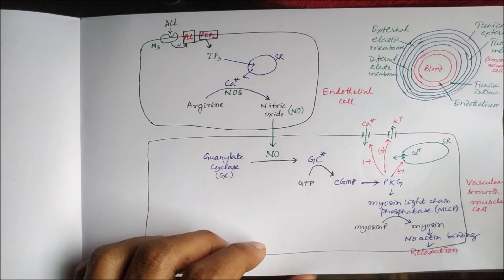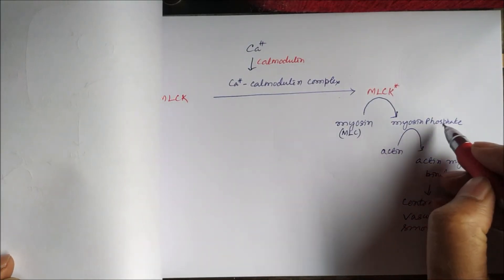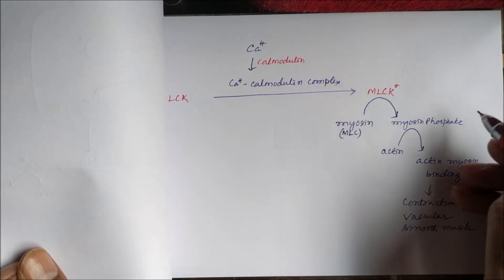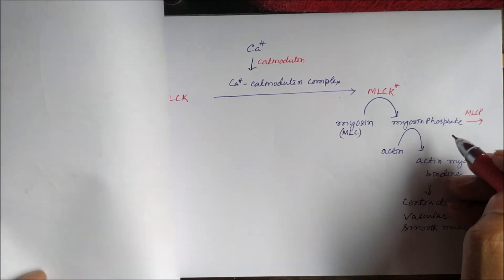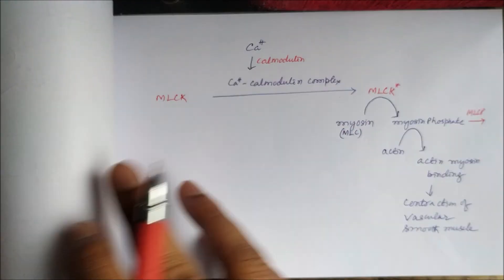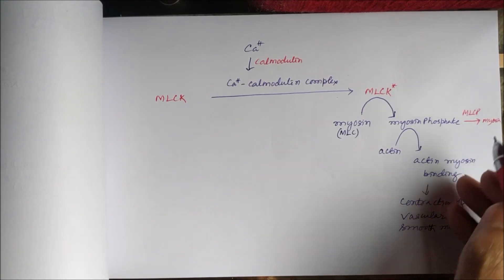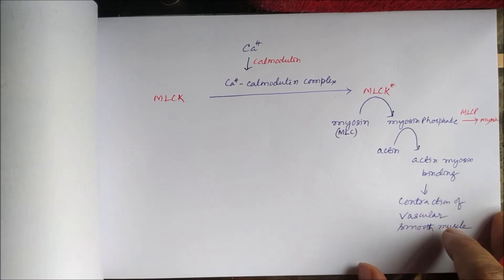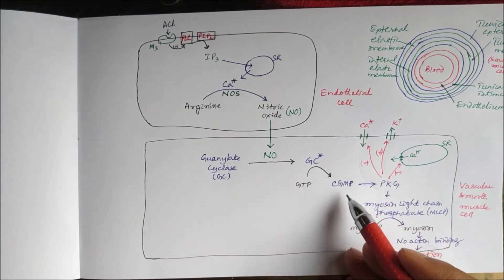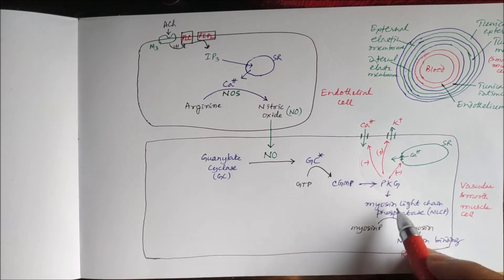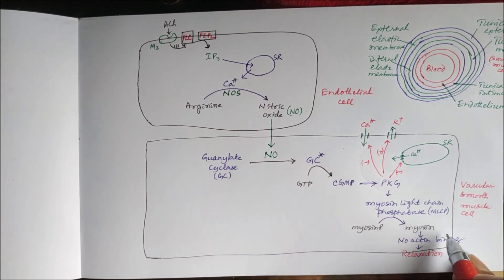This contraction caused by actin-myosin binding can be inhibited. Myosin-phosphate is required for actin binding. Myosin light chain phosphatase dephosphorylates myosin-phosphate back to myosin. When it becomes myosin again, there cannot be actin-myosin binding, and no actin-myosin binding means relaxation. So protein kinase G, activated by cyclic GMP, activates myosin light chain phosphatase, which dephosphorylates myosin-phosphate to myosin, causing relaxation.